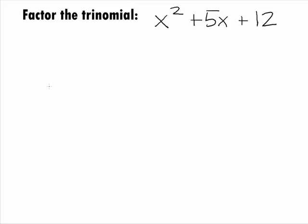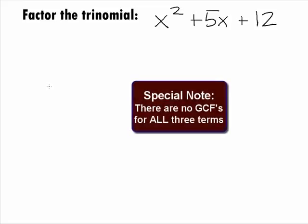In this example, we want to factor the trinomial x squared plus 5x plus 12. Note that this trinomial does not have a greatest common factor for all of its terms, so we just need to go into factoring the trinomial.